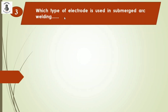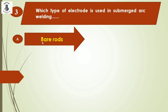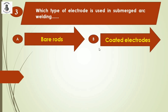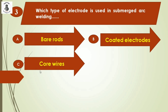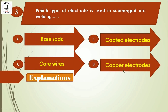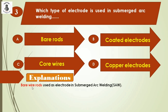Question 3: Which type of electrode is used in submerged arc welding? Option A: bare wire, option B: coated electrodes, option C: core wires, option D: copper electrode. In submerged arc welding, bare wire is used as the electrode material, and it is continuously fed during the metal joining process. The right answer is option A: bare wire electrode.